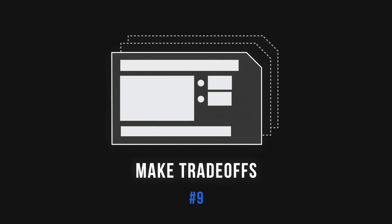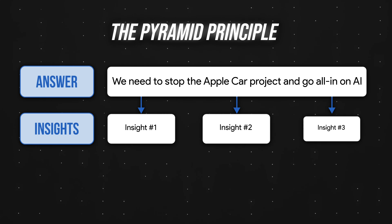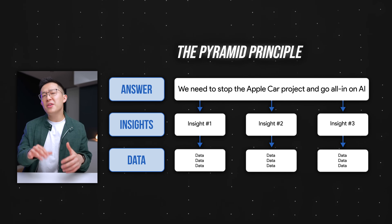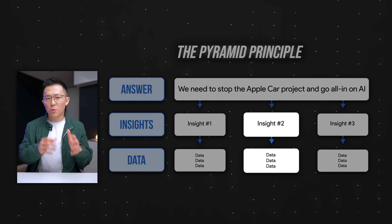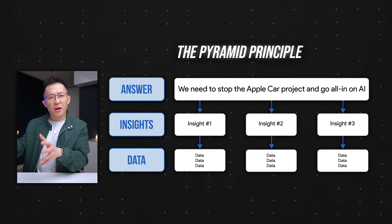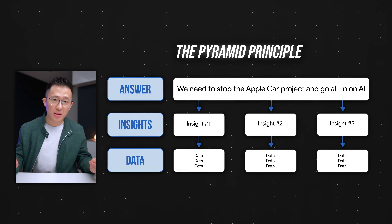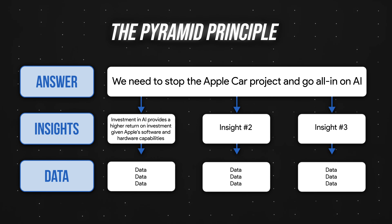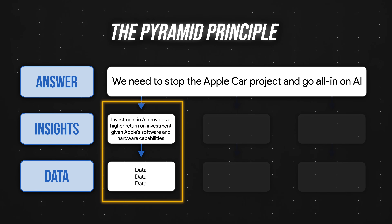Tip number nine: make trade-offs. Coming back to the Apple Car example, the conclusion is we stopped the Apple Car and pivot to AI — reached by uncovering multiple insights supported by lots of data. If you're responsible for presenting this, everything seems important. Catherine worked on this, Eddie worked on that, Craig worked on that, and we should be fair to everyone. But if we include everything, our key message gets diluted. The number one insight might be 'investment in AI provides a higher return on investment given Apple's software and hardware capabilities' — and if you had just one hour with Tim Cook, that's the argument you should focus on.